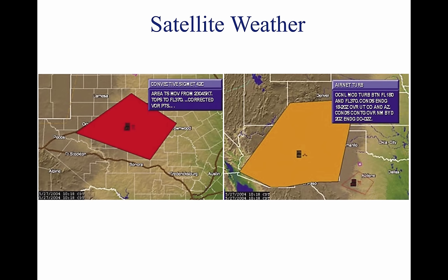AERMETs are weather advisories issued only to amend the area forecast concerning weather phenomena which are of operational interest to all aircraft. AERMETs concern weather of less severity than that covered by SIGMETs or convective SIGMETs. AERMETs cover moderate icing, moderate turbulence, sustained winds of 30 knots or more at the surface, widespread areas of ceilings less than 1,000 feet and/or visibility less than 3 miles, and extensive mountain obscurement.